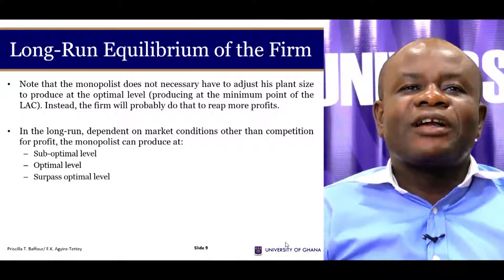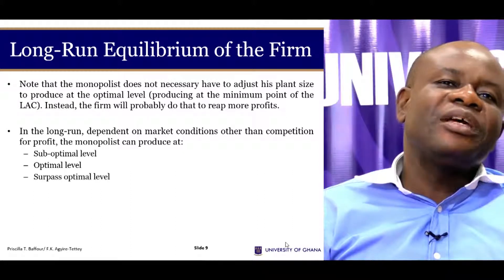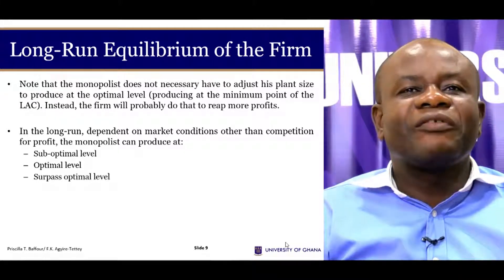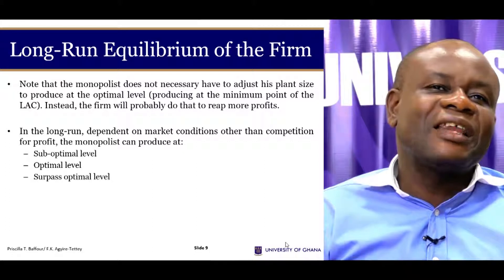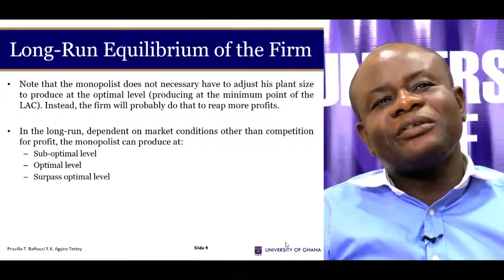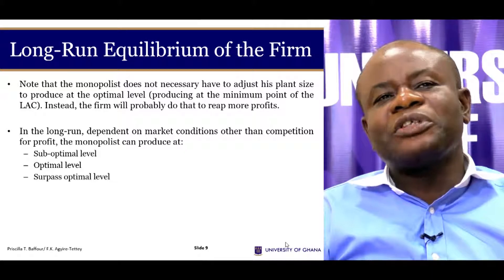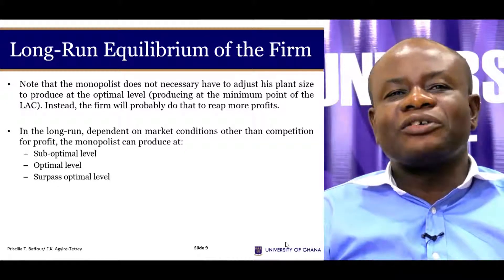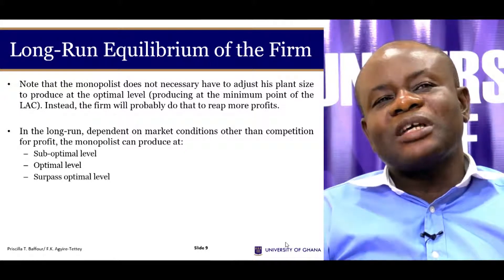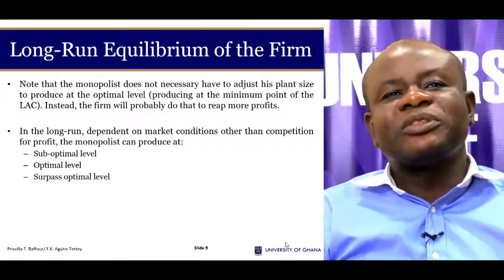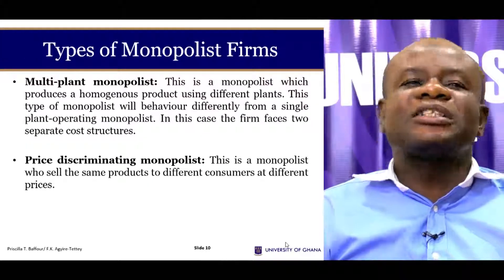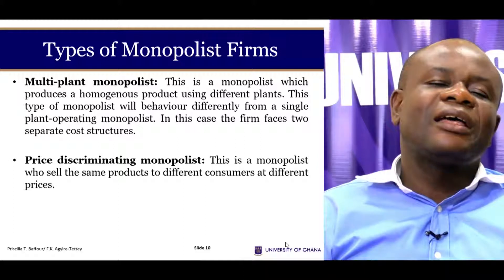In the long run, the monopoly can decide to produce at a suboptimal level — that is, at a declining part of the LAC — can produce at the minimum part of the LAC, or at a rising part of the LAC. In other words, the monopoly can operate at a suboptimal level, at an optimal level, or surpass the optimal level.